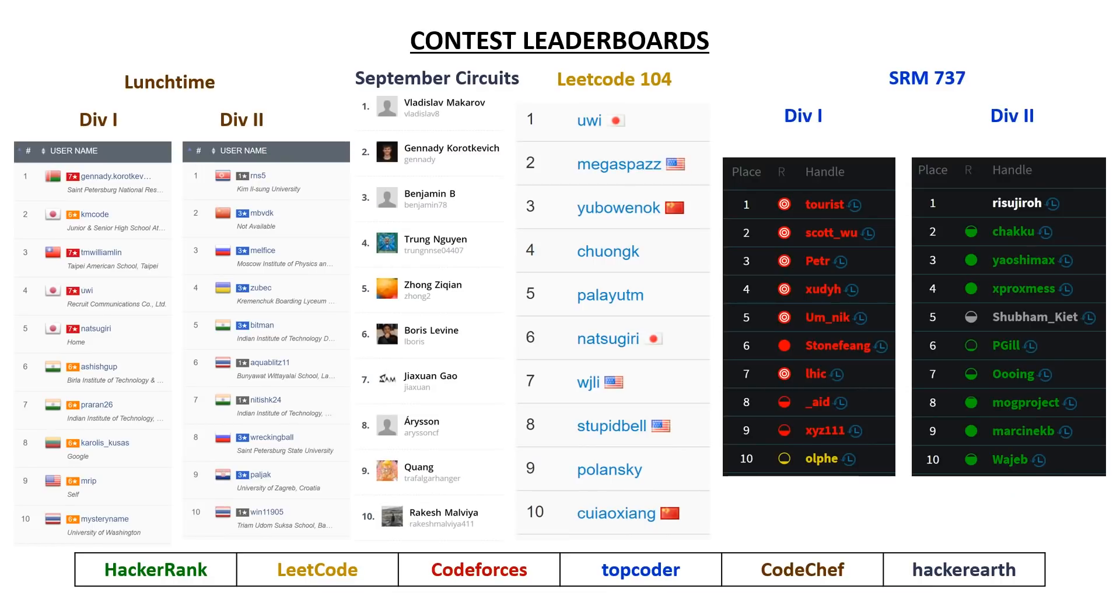Taking a look at the top 10 leaderboards, we had many familiar names on multiple top 10 leaderboards. Most notably, we had Gennady, aka Tourist, who placed first in both division one contests, the one from CodeChef and the one from TopCoder, and he placed second in the September circuits contest.